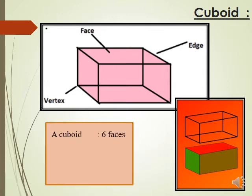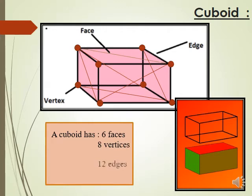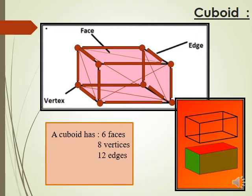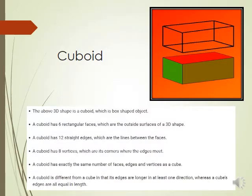The cuboid has six faces, eight vertices, and twelve edges. A cuboid is a box-shaped object with six rectangular faces, which are the outside surfaces. It has twelve straight edges — the lines between the faces — and eight vertices, which are its corners where the edges meet. A cuboid has exactly the same number of faces, edges, and vertices as a cube, but its edges are longer in at least one direction, whereas a cube's edges are all equal in length.